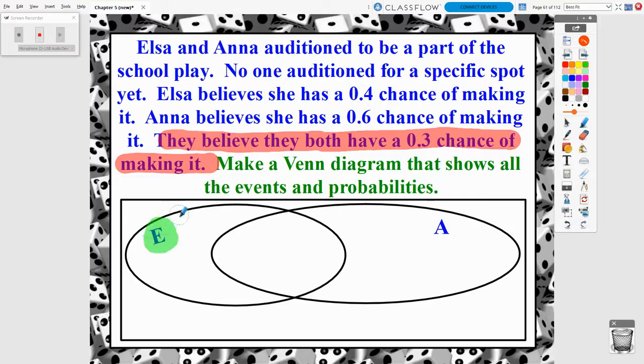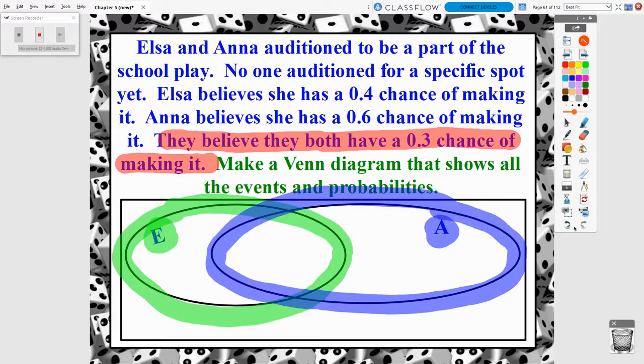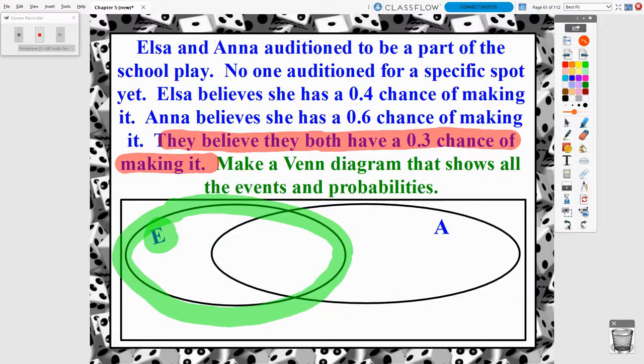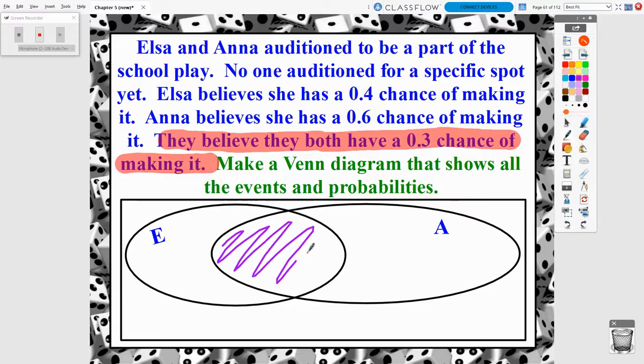But where I have E, this bubble here represents Elsa making the show. And where I have this A here, that's this whole bubble, represents Anna making the show. Now, I always start, if there is an intersection, I always start there. So this represents Elsa and Anna making the show. And we were told that that is a 30% chance, 0.3 probability.